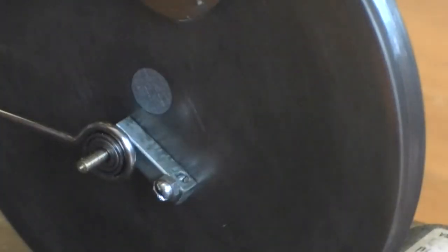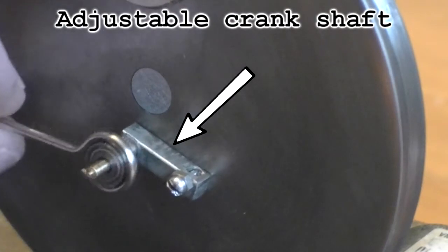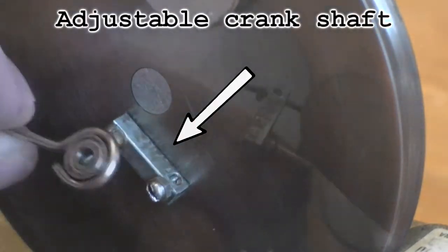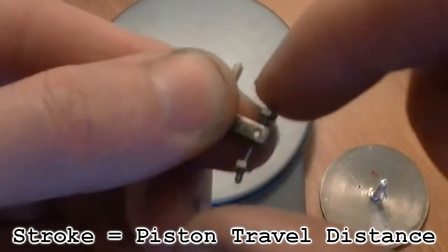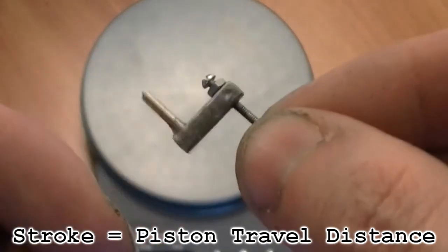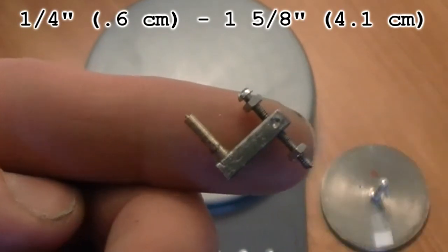Another modification of this engine over the lamina 1 engine is this adjustable crankshaft. This allows the stroke or distance the graphite piston travels to be adjusted from 1/4 inch to about 1 and 5/8 of an inch.